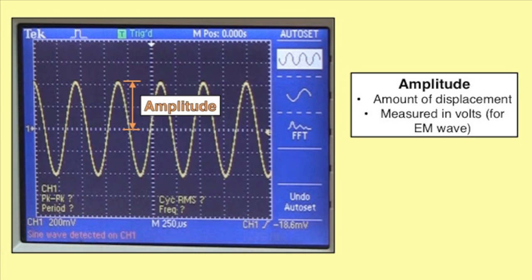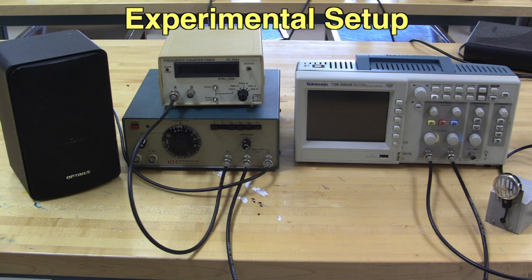The amplitude is the magnitude of the displacement. Amplitude is measured in volts for electromagnetic waves. For mechanical waves like the transverse wave on the slinky, amplitude is measured in meters.